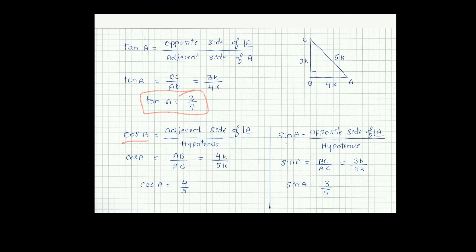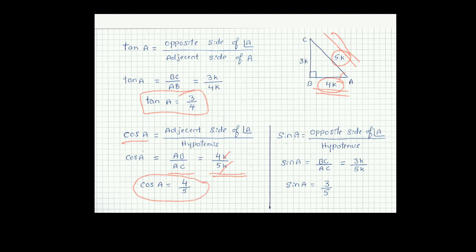Now we have to find cos A. Cos of angle A equals adjacent side of angle A divided by hypotenuse. Adjacent side AB is 4k and hypotenuse AC is 5k. So cos A equals 4k divided by 5k. The k cancels, therefore cos A equals 4 by 5.